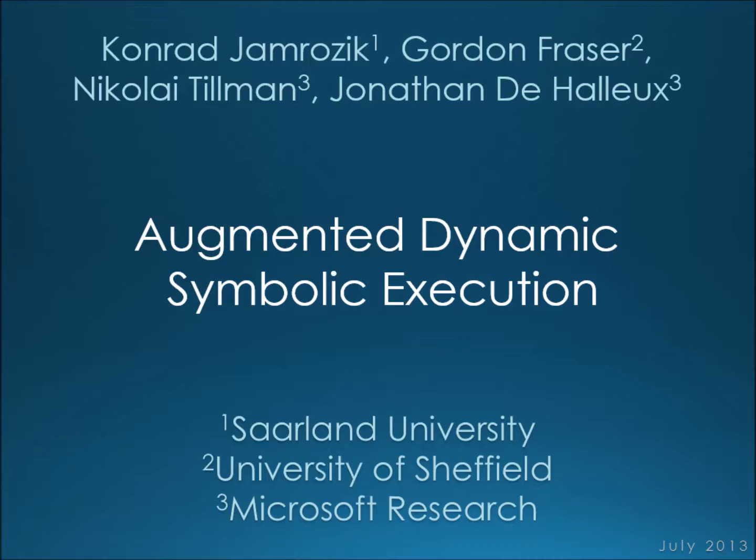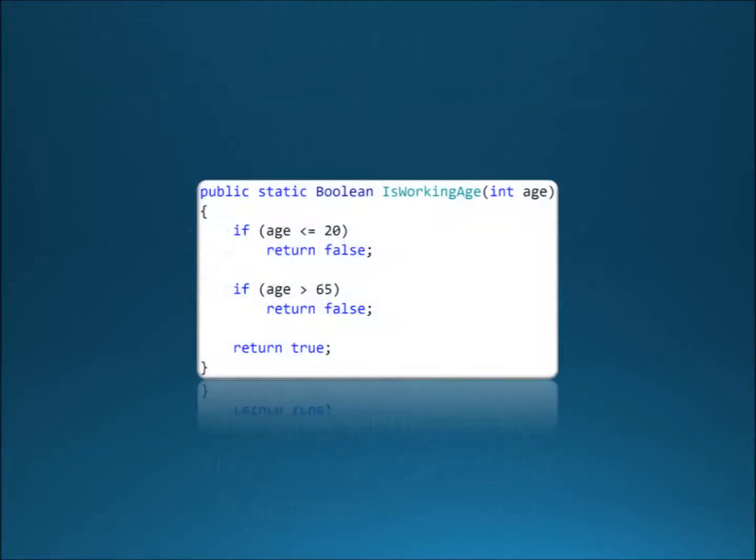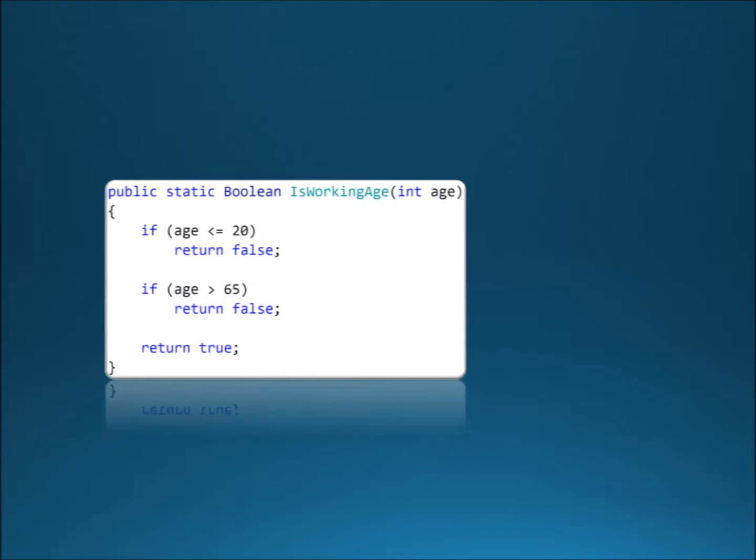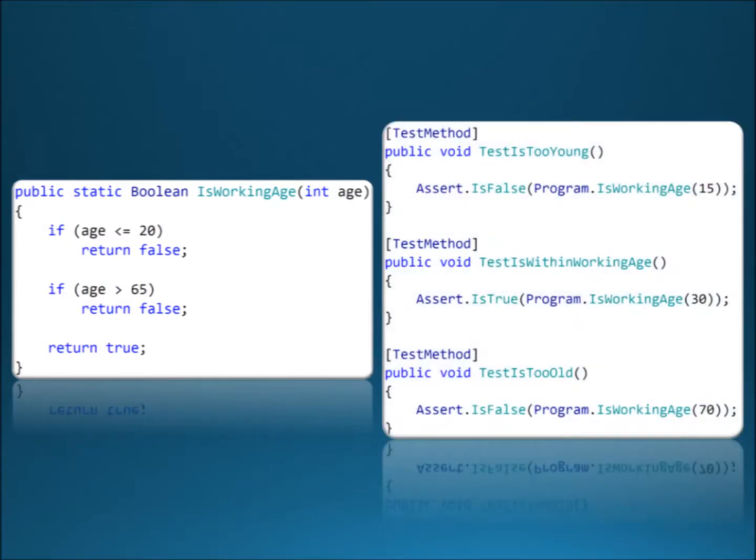Let's start with the high-level motivation of our research. Here we can see a sample method written in C-sharp. The method takes as input an integer denoting age and tells us if the age is a working age. We test if the method returns expected value for age equal to 15, 30 and 70.